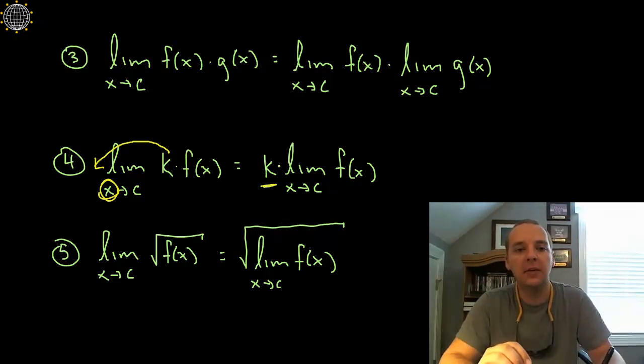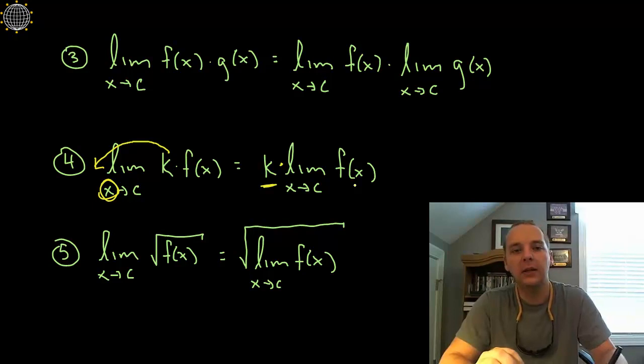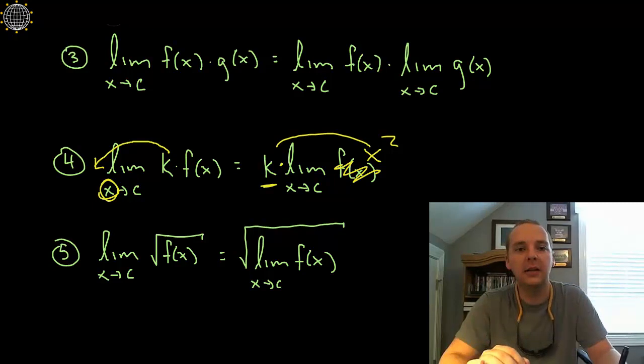So notice all we have is k times the limit of the function f of x. The only thing really important to not forget is people get very comfortable with this rule and want to pull things out if you had something like x squared for instance. You could not pull an x squared out like you would a constant because the limit depends on x. That term would have to stay inside the limit. You can only pull constants outside of a limit.